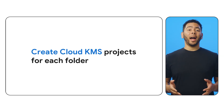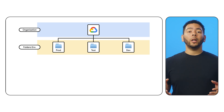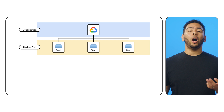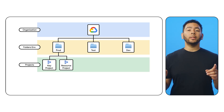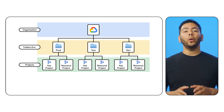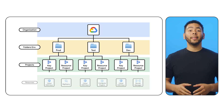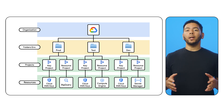Let's start with your resource hierarchy. To use AutoKey, you must have an organization resource that contains a folder resource. When you first set up Cloud KMS AutoKey, you would define a folder resource and enable AutoKey on that folder. I recommend creating one key project and one resource project per folder, and following this approach across your development, testing, and production folders. The key project will contain the keys created by AutoKey, and the resource project will host the Google Cloud resources that AutoKey will encrypt.